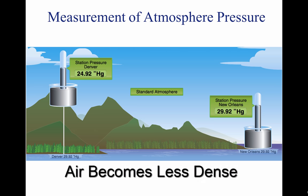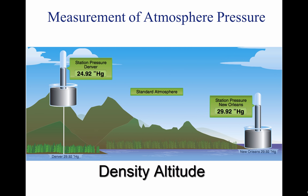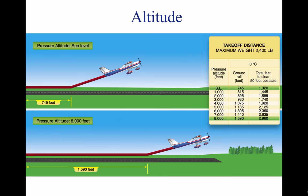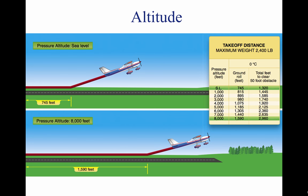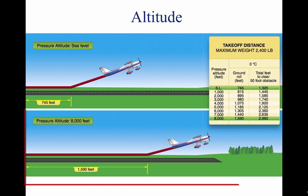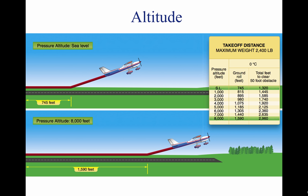As pressure decreases, the air becomes less dense or thinner. This is the equivalent of being at a higher altitude and is referred to as density altitude. As pressure decreases, density altitude increases and has a pronounced effect on aircraft performance. Altitude affects every aspect of flight, from aircraft performance to human performance. At higher altitudes with decreased atmospheric pressure, takeoff and landing distances are increased, as are climb rates. When an aircraft takes off, lift must be developed by the flow of air around the wings. If the air is thin, more speed is required to obtain enough lift for takeoff, therefore the ground run is longer.